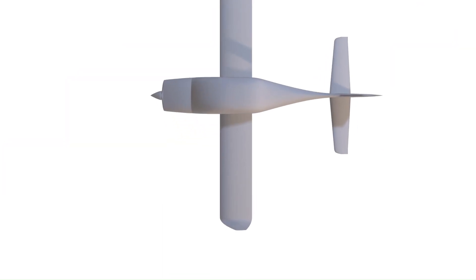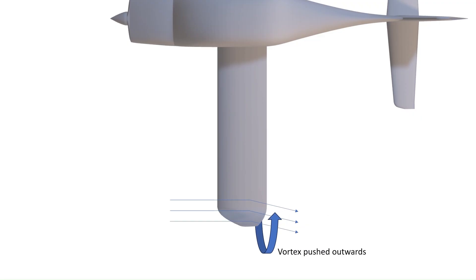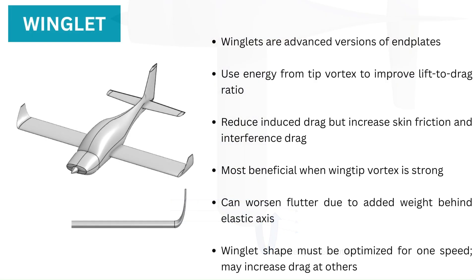The drag reduction of a winglet can also be visualized as an effective increase in span. Like all lifting surfaces, the winglet produces a downwash behind itself. Because the winglet is angled vertically, that downwash is actually an outwash, which blows the tip vortices further apart. Aerodynamically, the distance between the tip vortices is the effective span of the wing, so the winglet increases the wing's effective span, hence reducing drag due to lift. It should be noted that winglets provide the greatest benefit when the wingtip vortex is strong. For an already efficient, high aspect ratio wing aircraft, the benefit may be little to none.